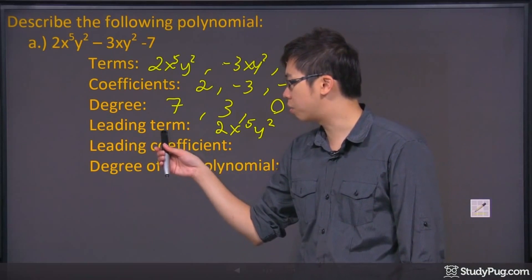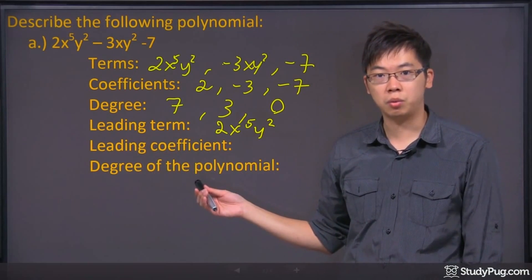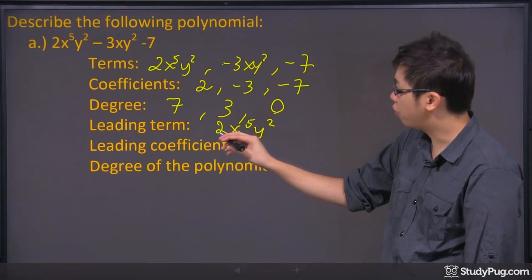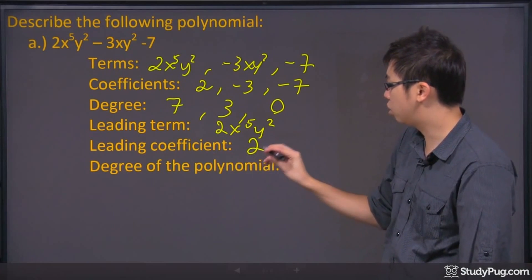Now for the leading term, it has a leading coefficient, which means the number of the leading term. So the number in the front of the leading term is just the 2.